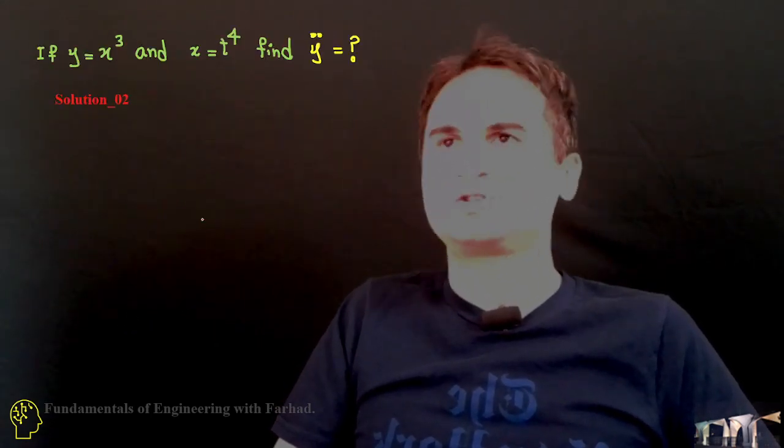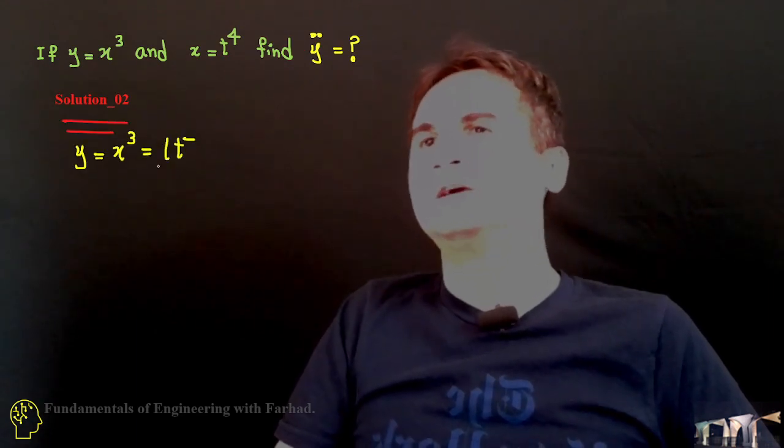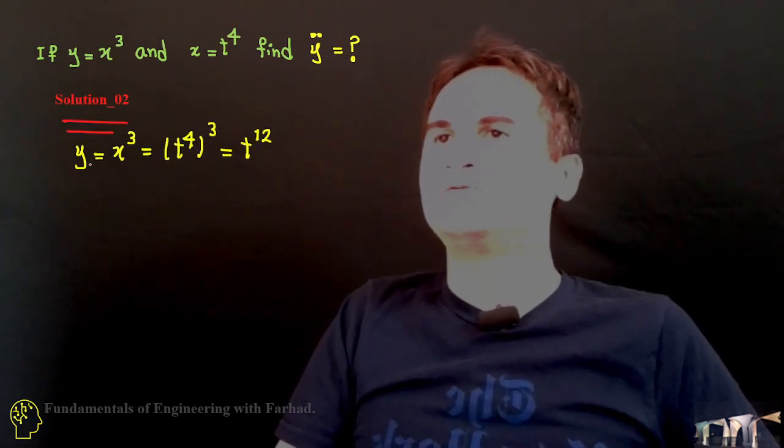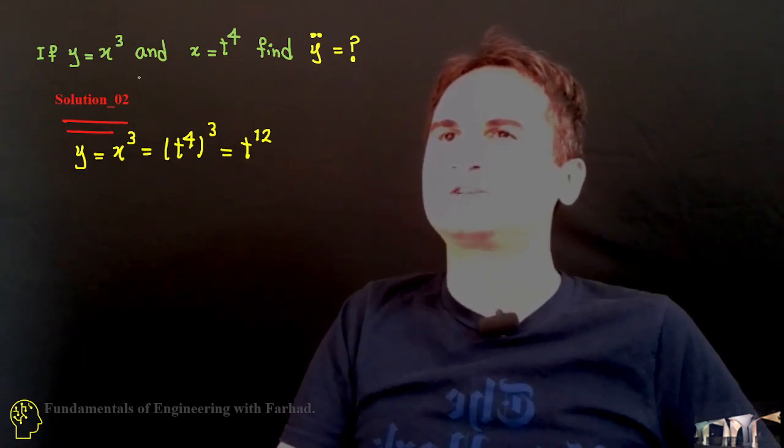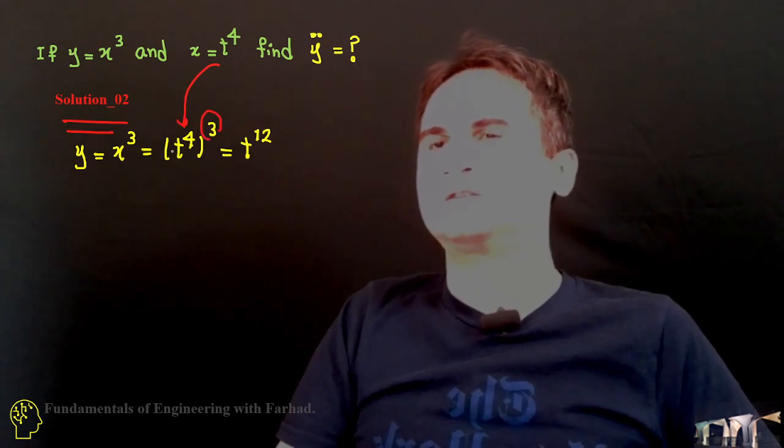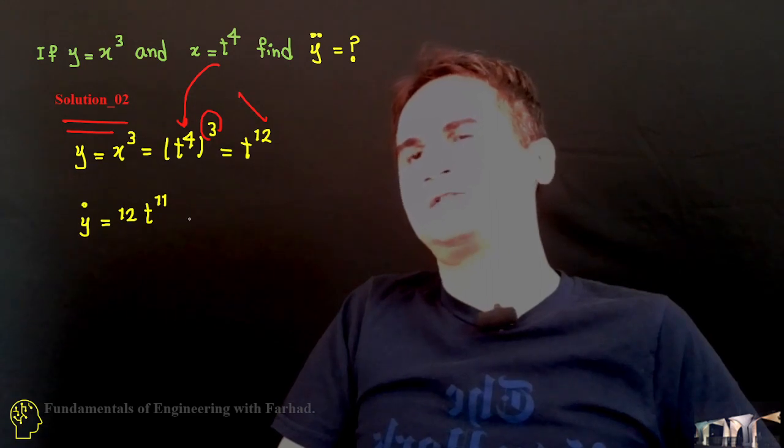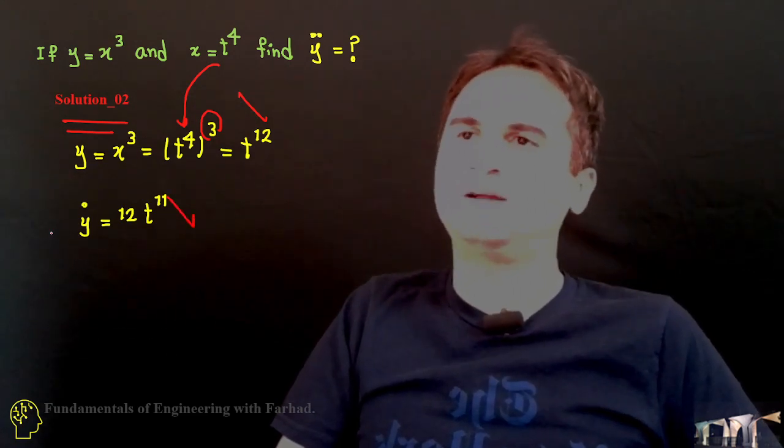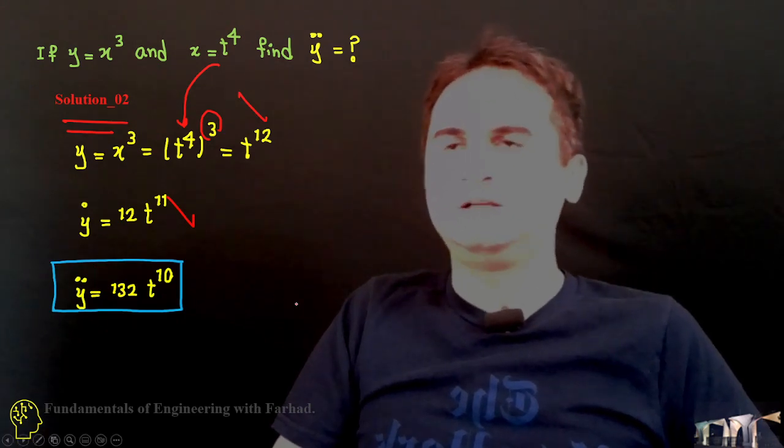And an easier approach is also like, we can solve it in a second approach. At the very beginning you just replace y is equal to x cubed, replace x cubed like t to the fourth here, then cube. It just gives us t to the twelfth, then y dot is 12t to the 11th and y double dot is 132t to the tenth.